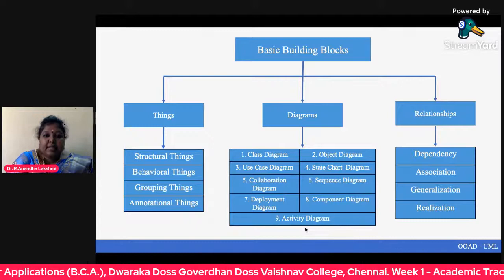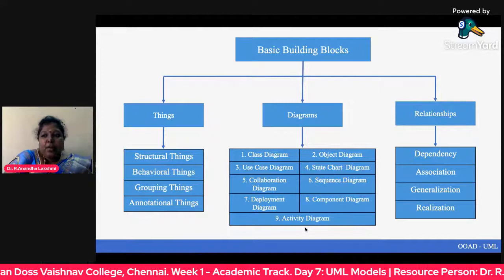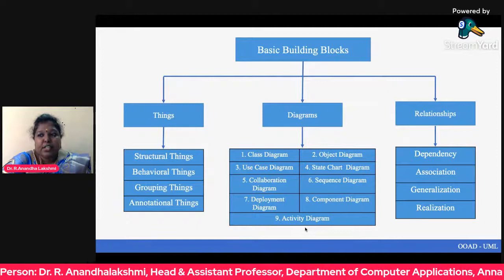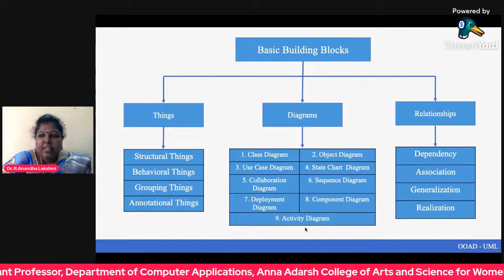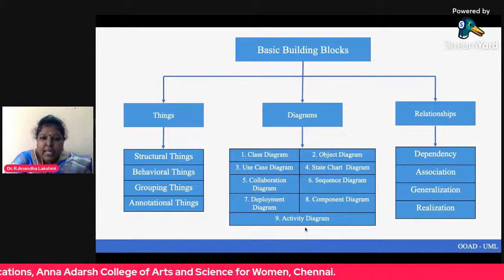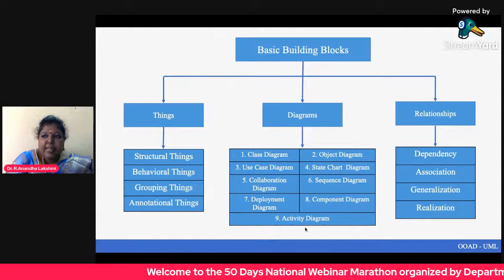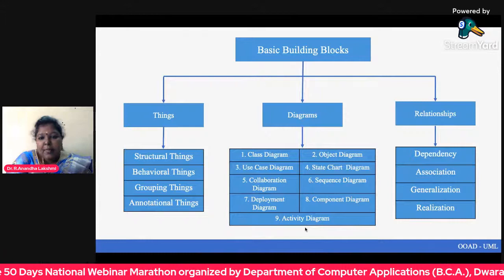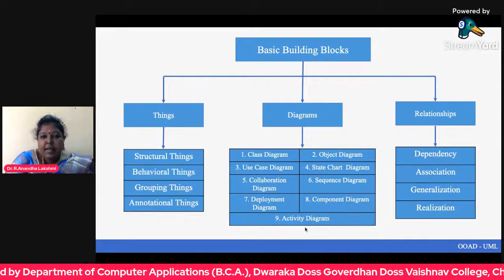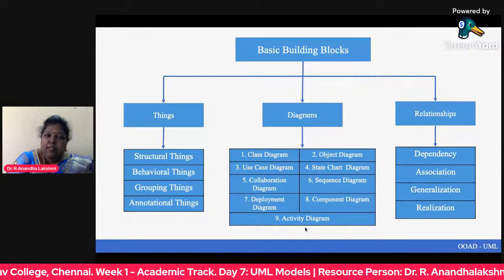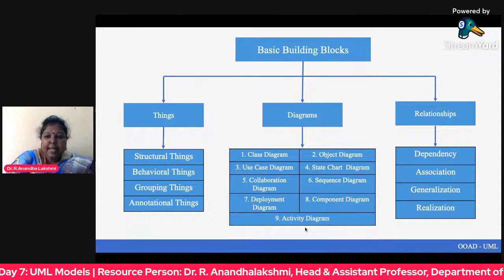The building block diagram is divided into three parts: things, diagrams, and relationships. There are nine diagrams: class diagram, object diagram, use case diagram, state chart diagram, and collaboration and sequence diagrams — which come under the interaction diagram. Deployment diagram and component diagram come under the implementation diagram. The last one is activity diagram. Things are of four types and relationships are of four types as well.